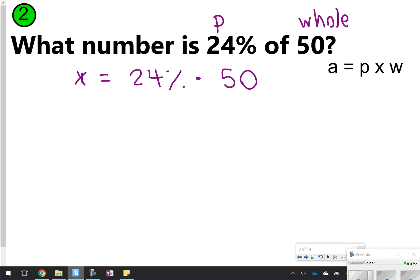Remember, before we started working this out, you do need to change this percent to a decimal. So instead of 24, it needs to be 0.24. We're basically going to be multiplying 0.24 and 50. So you just take your calculator, and 0.24 times 50 is 12. So 12 is 24% of 50.